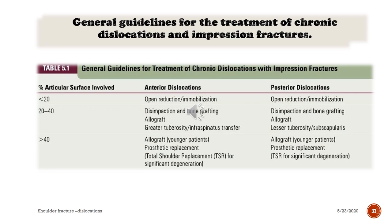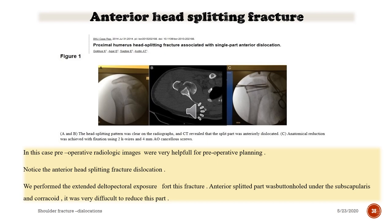General guidelines for treatment of chronic dislocations and impression fractures: if the articular surface involved is below 20%, open reduction and immobilization is enough. Between 20% and 40%, bone grafting will be necessary. Above 40%, allografts for younger patients or prosthetic replacement is necessary. Allografts are more feasible for younger patients and prosthetic replacement for older patients.